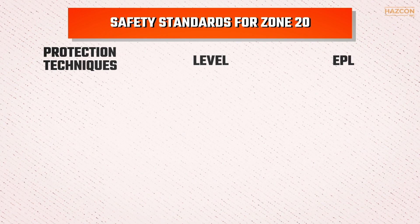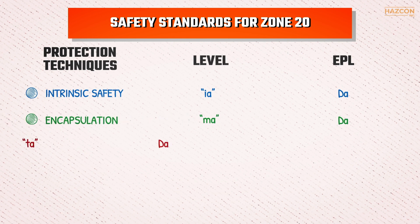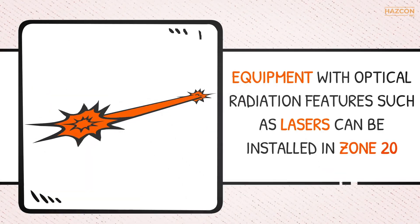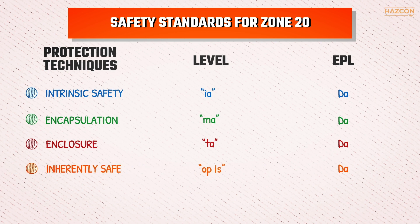In order to be certified as compliant with safety standards for Zone 20, an electrical device must be protected by one or more of the following protection techniques: intrinsic safety with level of protection IA, encapsulation with MA protection, and protection by enclosure with TA marking. Additionally, equipment with optical radiation features such as lasers can be installed in Zone 20 if the optical power is inherently safe using OPIS protection or using an interlock system complying with OPSH protection with an Equipment Protection Level of DA.